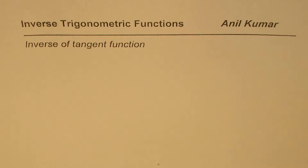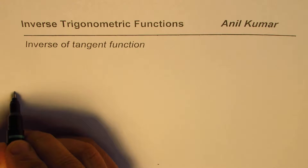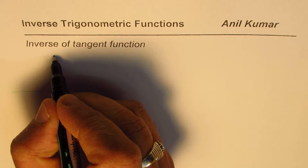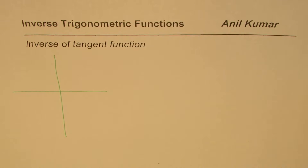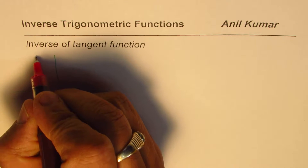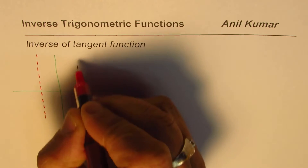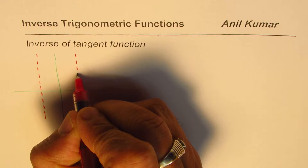I'm Anil Kumar and in this video we will learn what is the inverse of the tan function. We know tan has a domain of all real numbers, with the restriction that it cannot have odd multiples of π/2, since all odd multiples of π/2 give undefined values for the tan function. Let me sketch the vertical asymptotes at odd multiples of π/2.